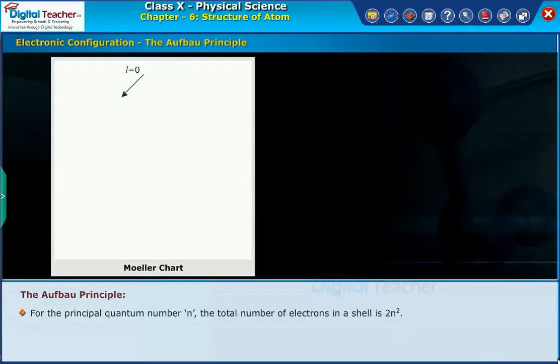The Aufbau principle. For the principal quantum number n, the total number of electrons in a shell is 2n².